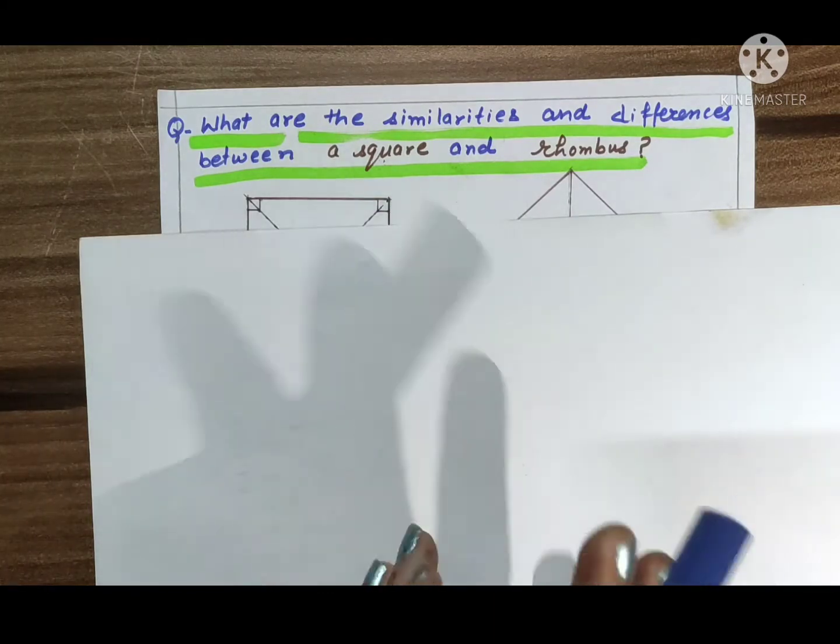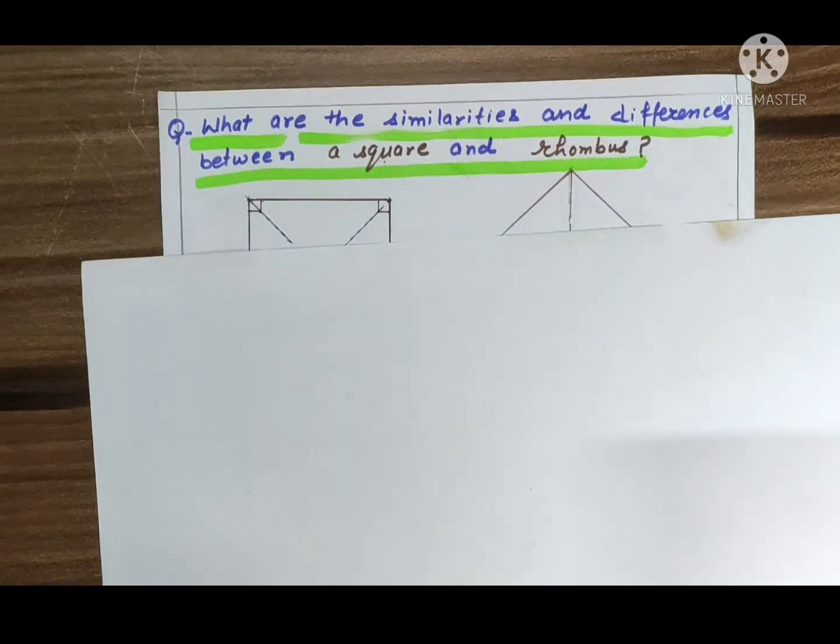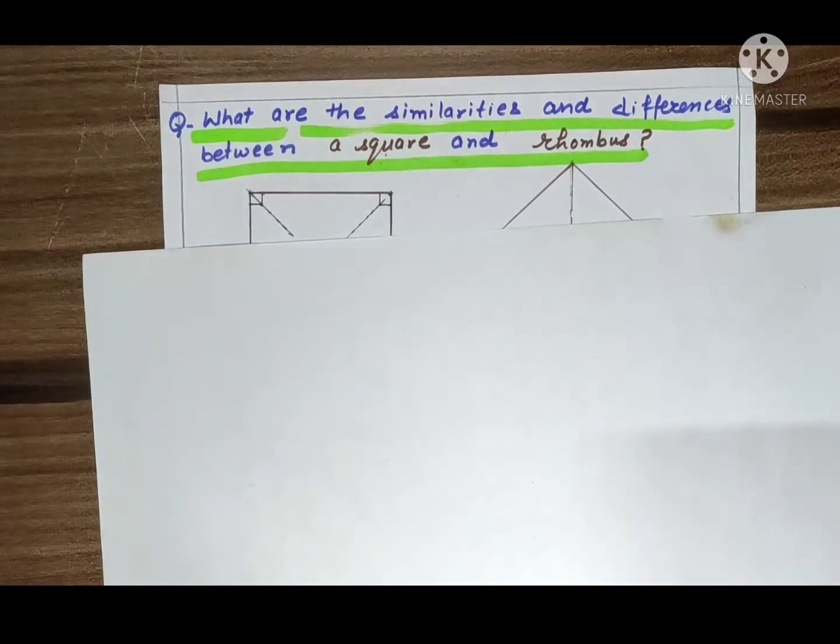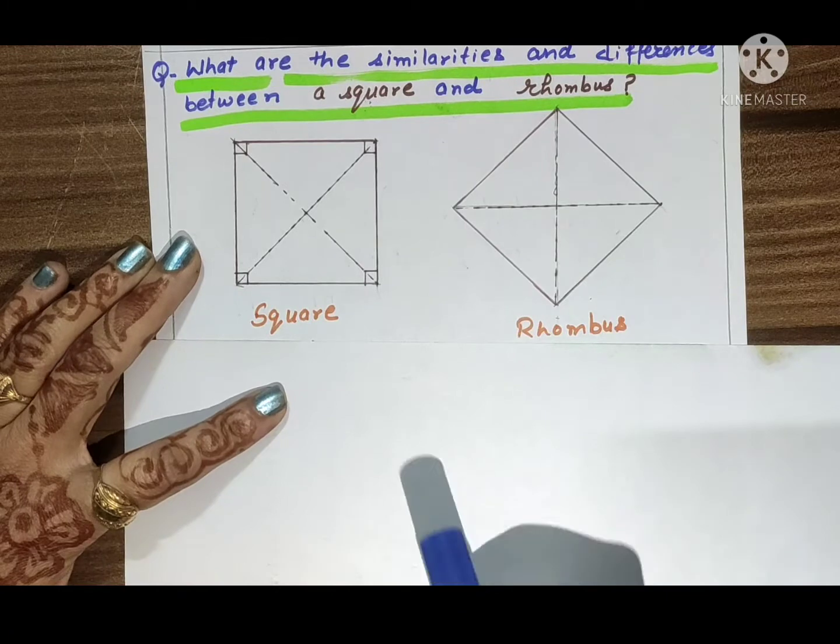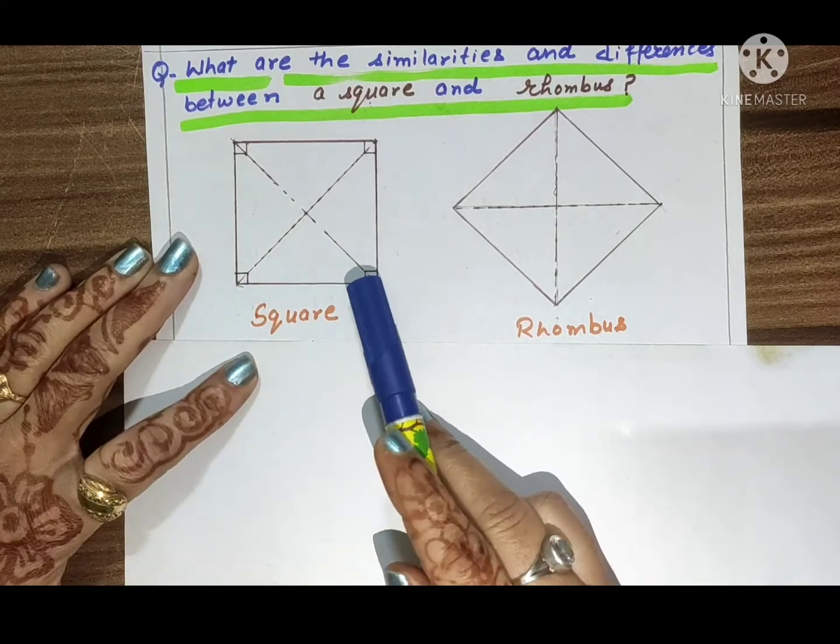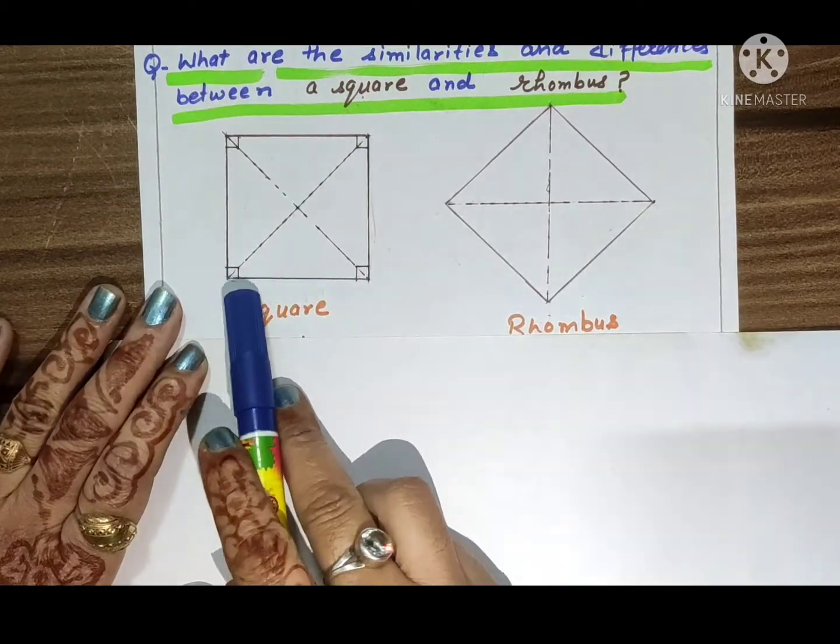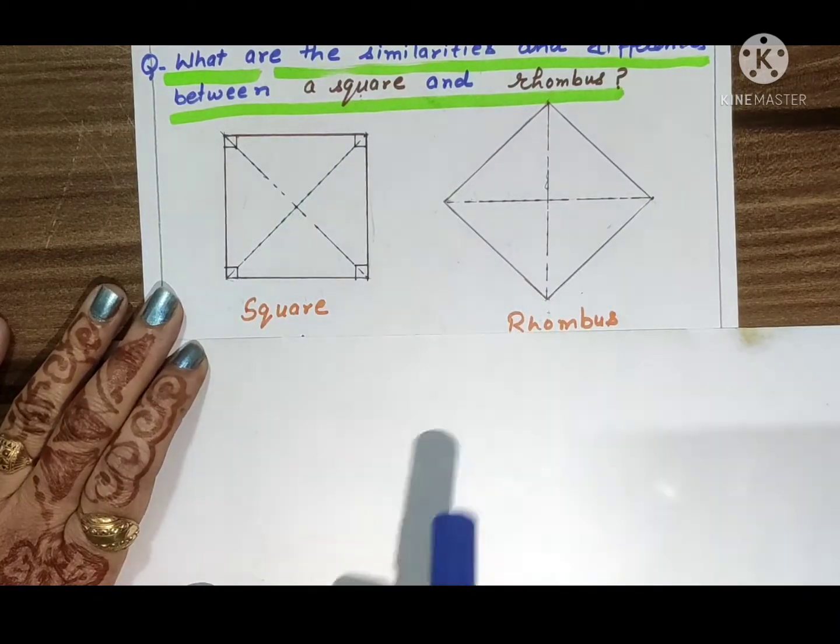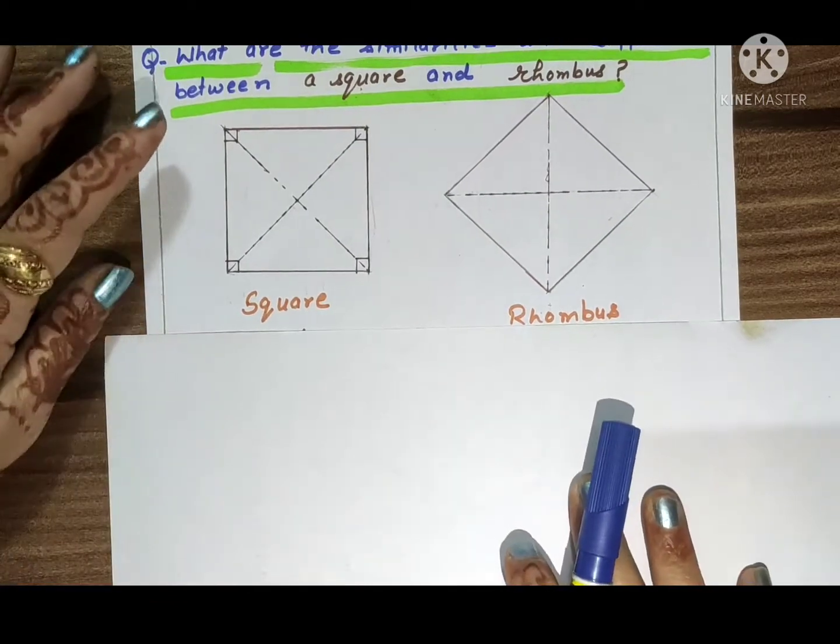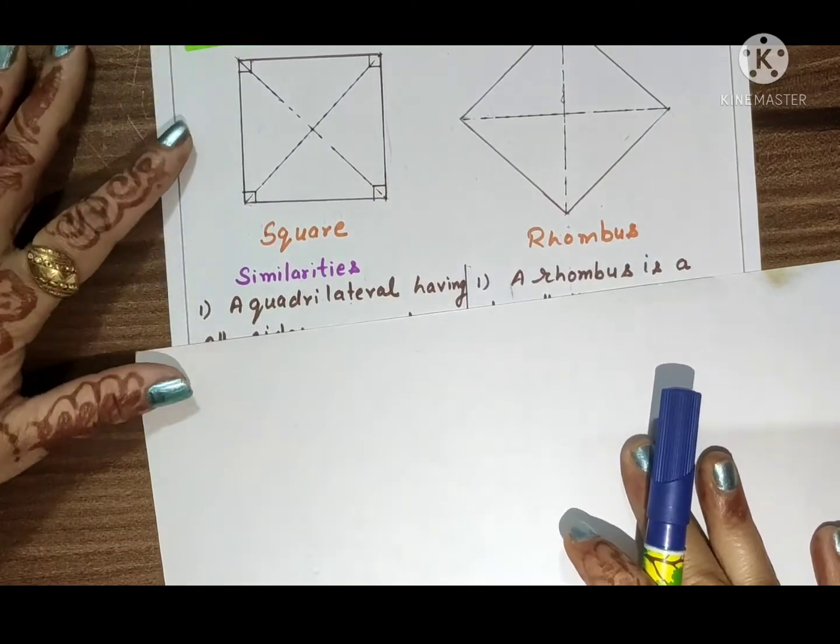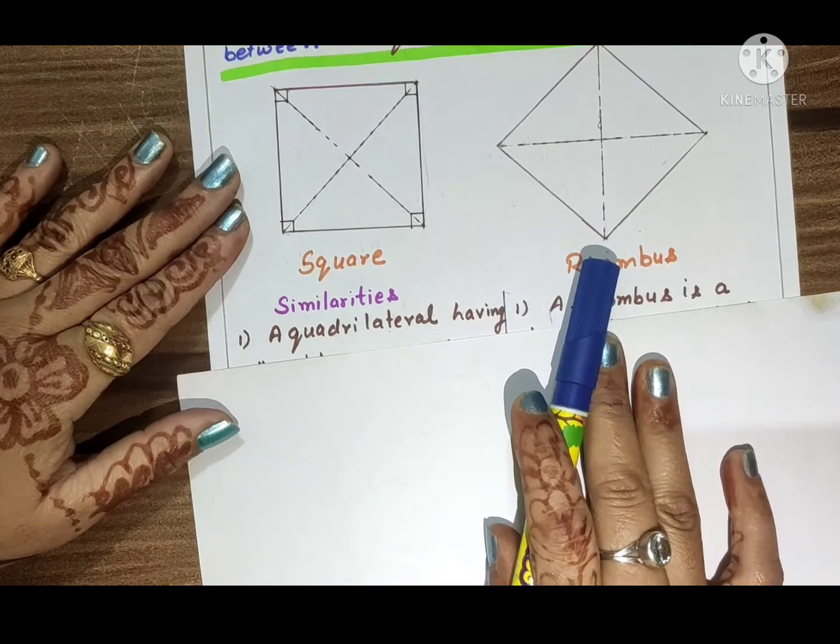Students, here I draw a square and this is rhombus. So this is square and this is rhombus. So let us do first the similarities, then we will do the differences between these two figures, square and rhombus.